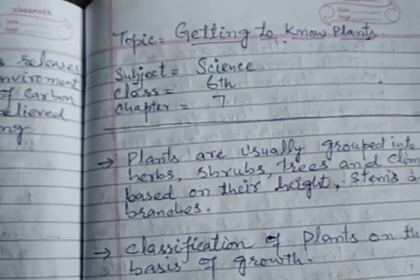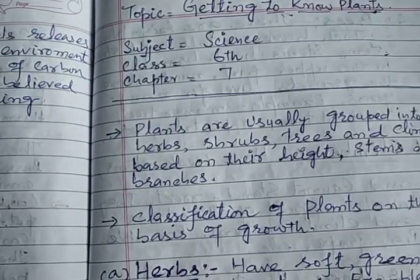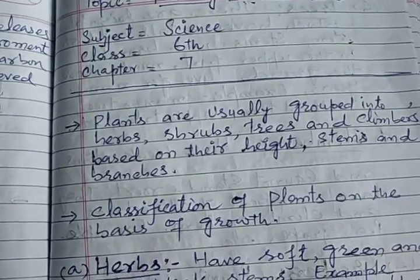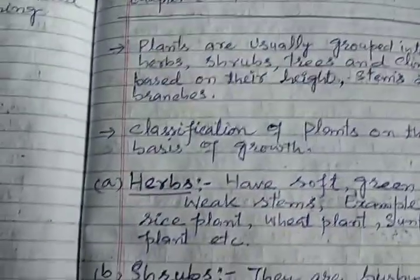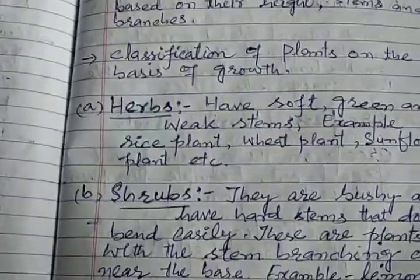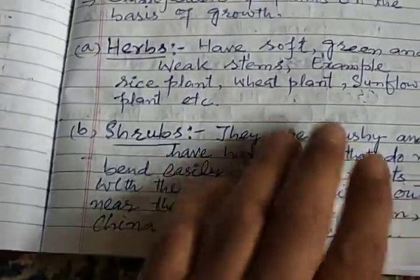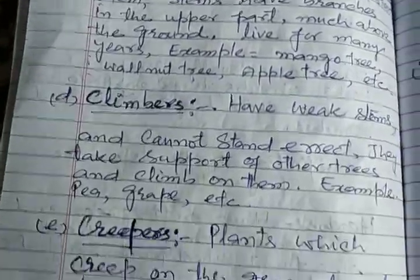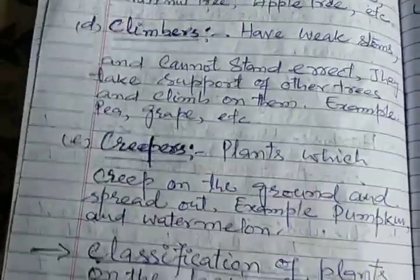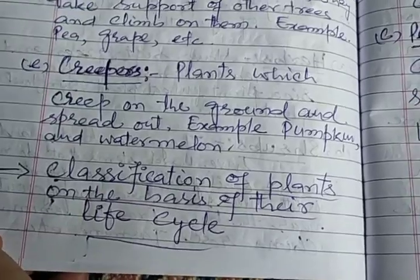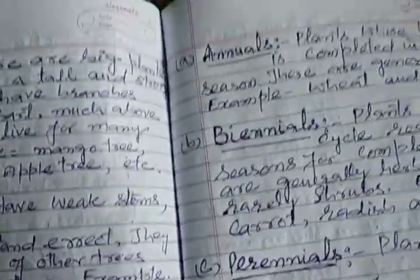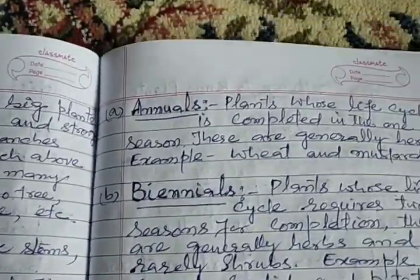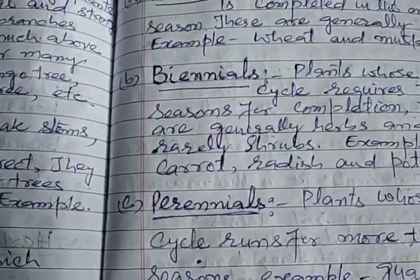This lecture covers the classification of plants on the basis of growth: Herbs, Shrubs, Trees, Climbers, and Creepers. Also covered is the classification of plants on the basis of their life cycle: Annuals, Biennials, and Perennials.